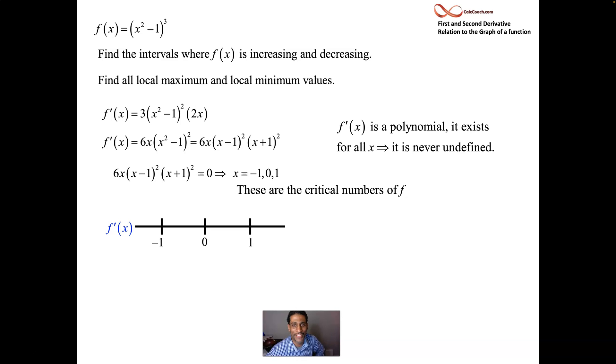And so look, x minus 1 is squared, x plus 1 is squared. That's always going to be positive. Times 6 is going to be positive. So what really determines the sign on this derivative is the x value. So when x is negative, your derivative will be negative. And when x is positive, your derivative will be positive. So let's go ahead and just label that with a bunch of signs.